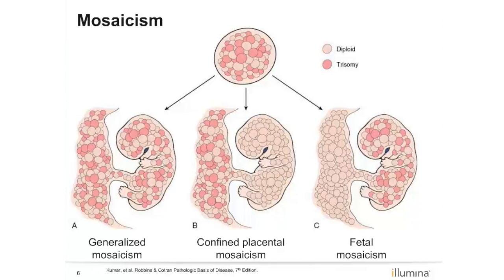The developing fetus and placenta are derived from the same cells, and in the majority of cases, the genetic composition of fetus and placenta will be identical. However, in some cases, there will be a change of the chromosomes in either the placenta or in the fetus, leading to a difference in their genetic information. Figure A on this slide represents a fetus and placenta that are both mosaics for a trisomy. Since the NIPT assay averages the amount of cell-free DNA present across the placenta, a negative or positive result could be obtained, and neither would be completely accurate.